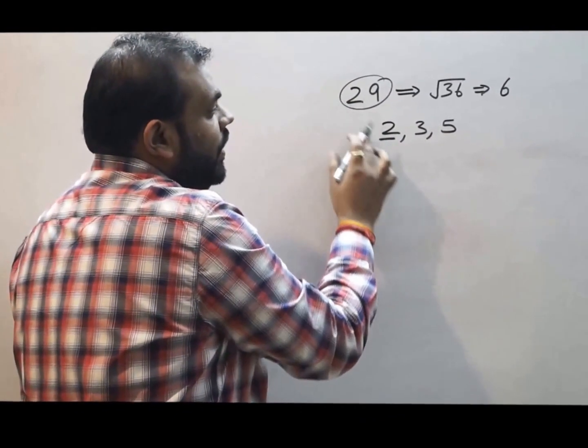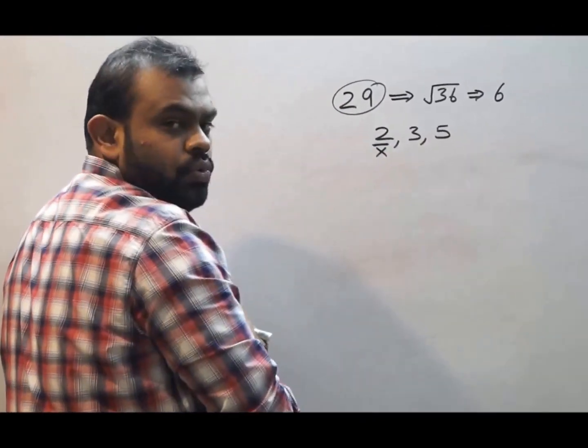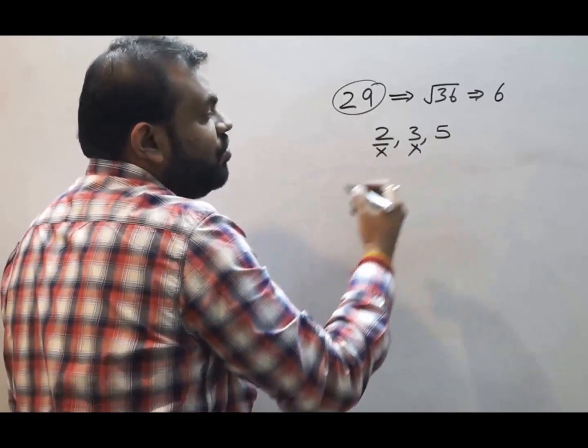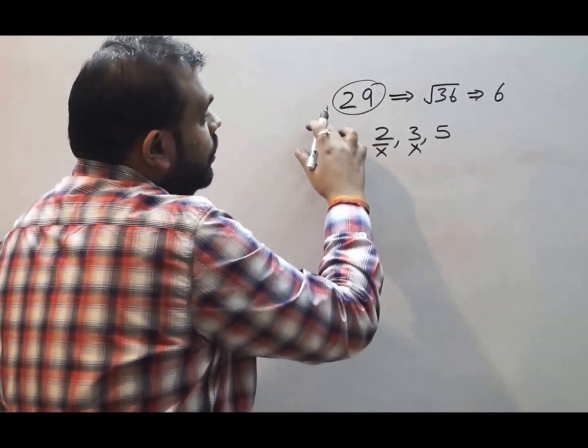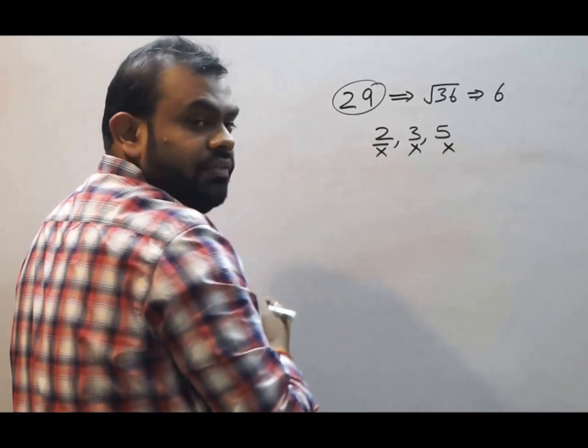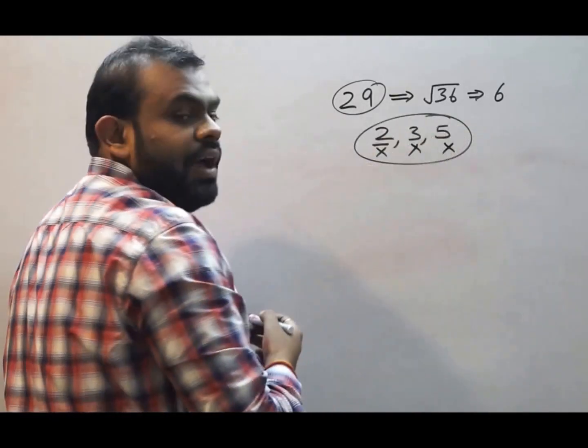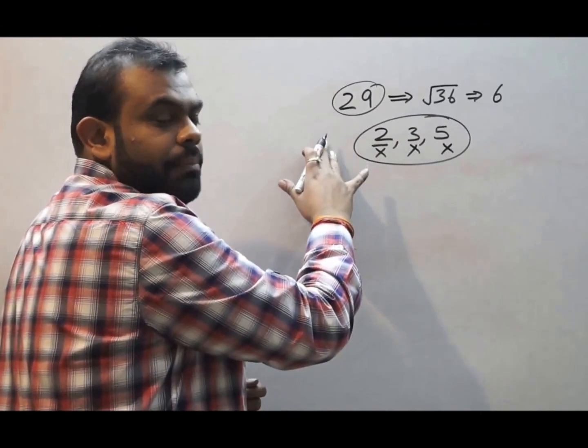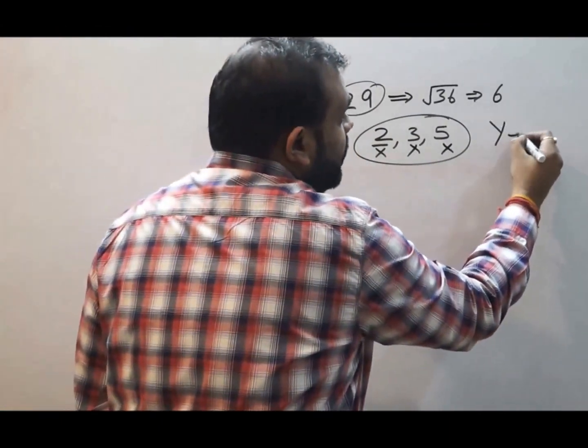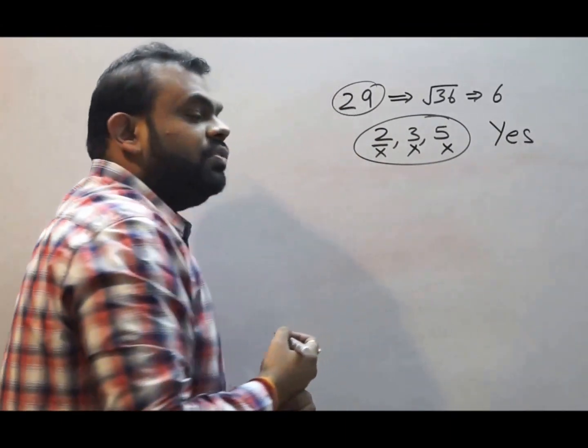We can see that 29 is not divisible by 2. 29 is not divisible by 3. 29 is not divisible by 5. When we see that all of these numbers are not dividing the given number then we can say that yes, the given number is prime.